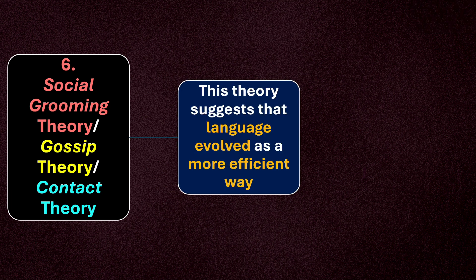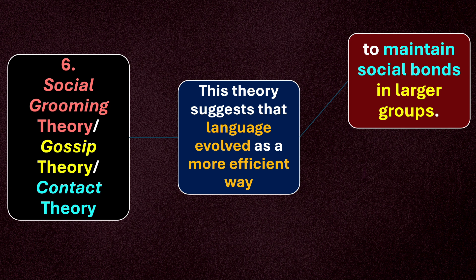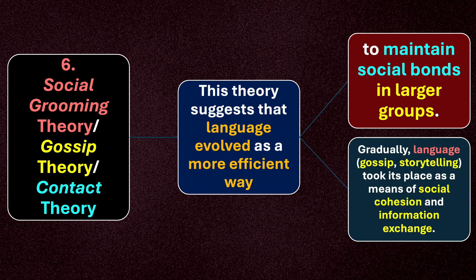Moving on to number six: social grooming theory, also called gossip theory or contact theory. This theory suggests that language evolved as a more efficient way to maintain social bonds in larger groups. Gradually, language, gossip, and storytelling took their place as means of social cohesion and information exchange. Many believe language may have also come from humans needing to express feelings — sometimes meaningful, sometimes in a meaningless way — to gossip and pass time, which might have been one reason for the evolution of language.